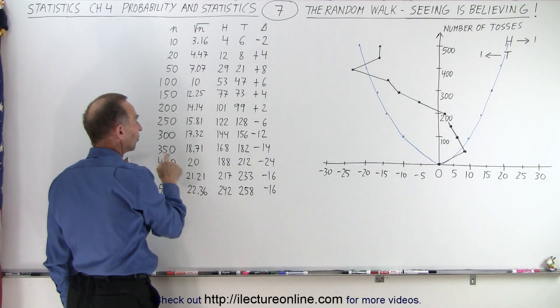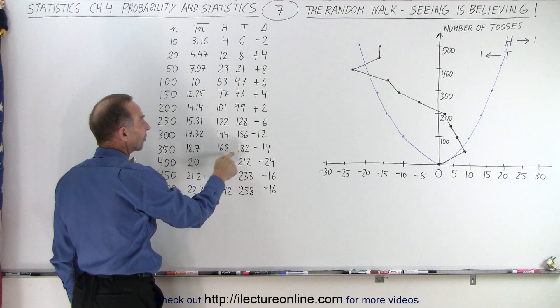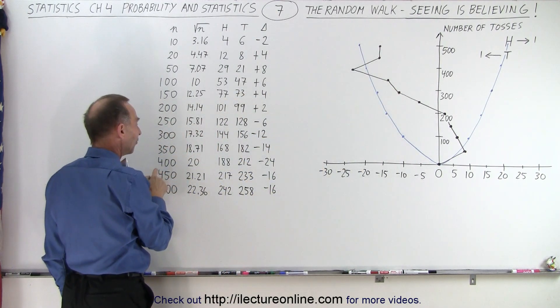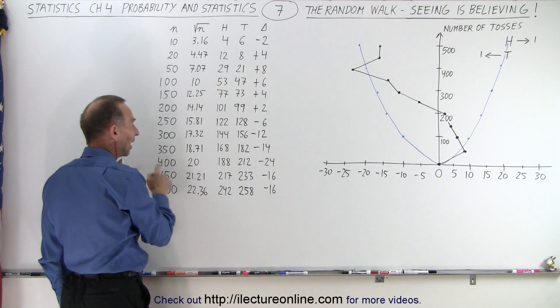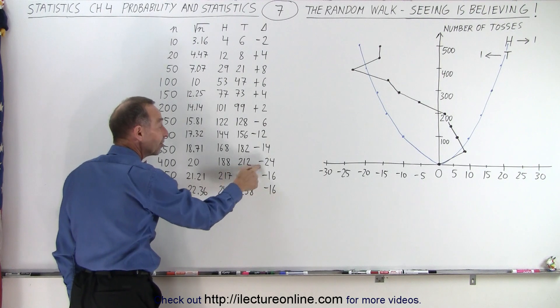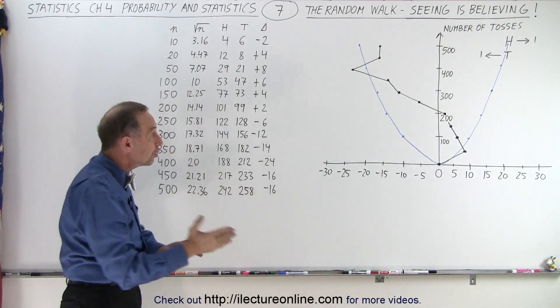After 350 tosses I had 168 heads and 182 tails, I was 14 units to the left. And look at this, after 400 tosses, I had 188 heads, 212 tails, and I was 24 units to the left.